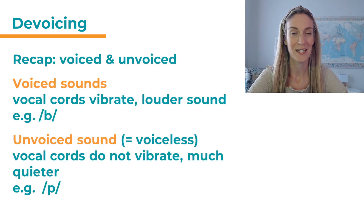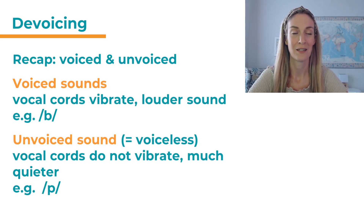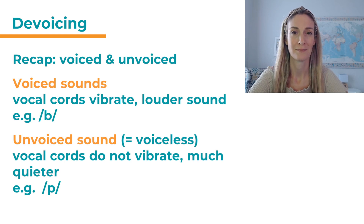Before we start with de-voicing, let's recap what voiced and unvoiced really means. Voiced sounds — for those we use our vocal cords when we produce them, and that creates a much louder sound. Unvoiced sounds do not use the vocal cords and as a result they're a lot quieter. An example of a voiced sound would be 'b' and an example of an unvoiced sound would be 'p' — much quieter.